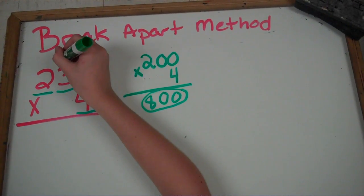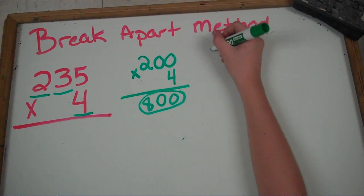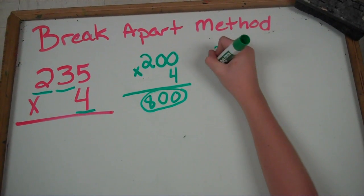Then the 3, which is in the tens place, you would do as 30. Bring over your 4, and times it again.